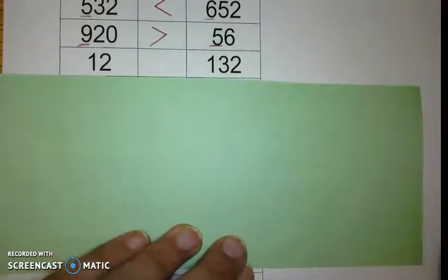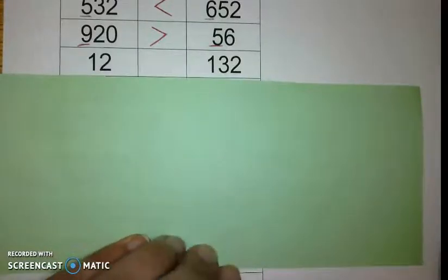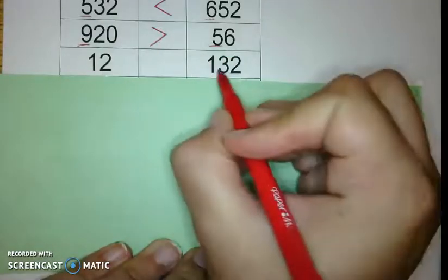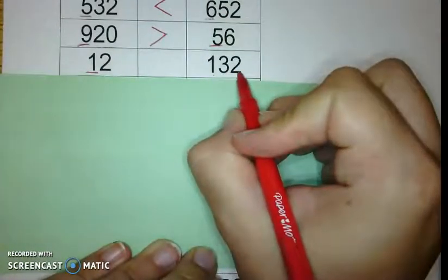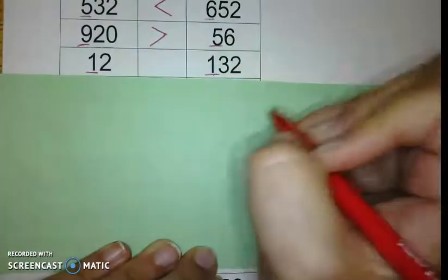All right. Let's try this one together before you try some on your own. 12 and 132. The highest place value in 12 is the 1 in the tens. The highest place value in 132 is the 1 in the hundreds.